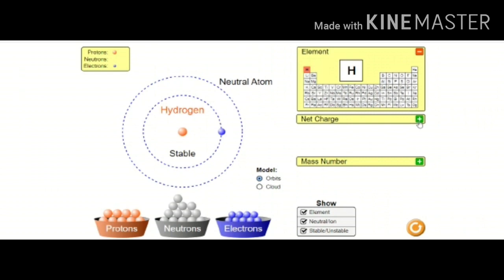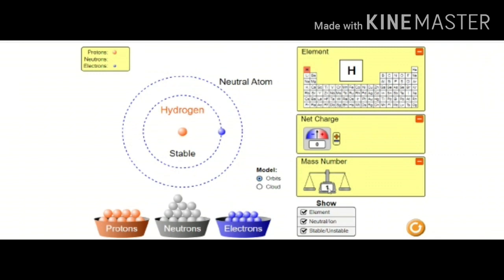Now let us see the net charge. You observe the net charge here — the number of negatively charged particles is equal to the number of positively charged particles, therefore the net charge is zero. If you observe the mass number, the mass number is one because it contains one proton. So now I am going to insert one neutron. Observe the mass number.